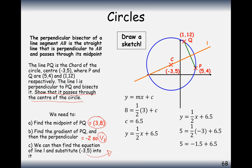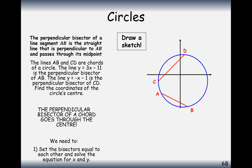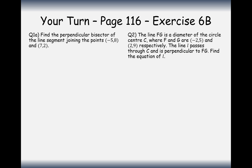The perpendicular bisector always passes through the centre of the circle. So if we know two equations that pass through the centre, we can solve them simultaneously to find it. One perpendicular bisector is y equals 3x minus 11, and the other is y equals minus x minus 1. Both equations intersect at the centre of the circle. Setting one equal to the other and solving, we get x equals 2.5 and y equals minus 3.5 — that is the centre of the circle.